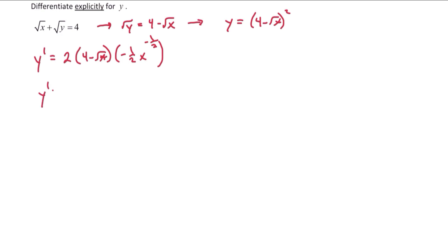Simplifying this we will get negative 4 plus square root of x over the square root of x. If we wanted to we could rewrite this as y prime equals negative 4 over the square root of x plus 1. Make note of that.